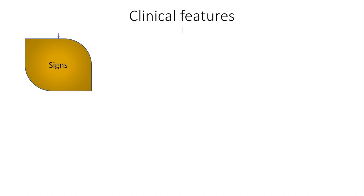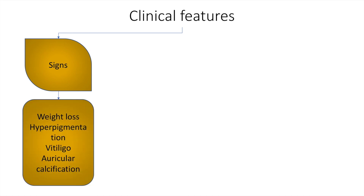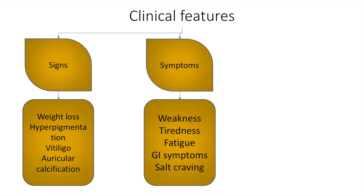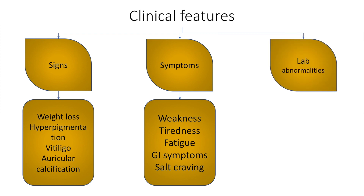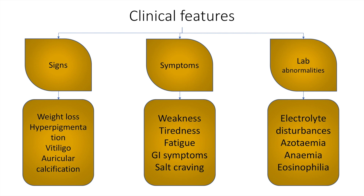The clinical features of adrenal insufficiency may also be divided into signs, which include hyperpigmentation, weight loss, vitiligo, and auricular calcification; symptoms such as weakness, tiredness, fatigue, GI symptoms, and salt craving; and laboratory abnormalities such as electrolyte disturbances, azotemia, anemia, and eosinophilia.